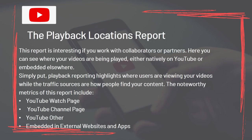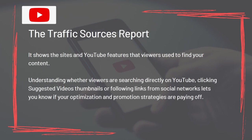The Playback Locations Report shows where your videos are being played, either natively on YouTube or embedded elsewhere. Noteworthy metrics include YouTube Watch Page, YouTube Channel Page, YouTube Other, and embedded in external websites and apps. The Traffic Sources Report shows the sites and YouTube features that viewers use to find your content. Understanding whether viewers are searching directly on YouTube, clicking suggested video thumbnails, or following social network links lets you know if your optimization and promotion strategies are paying off.